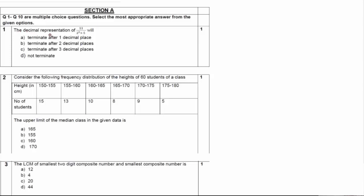Question number one: the decimal representation of 11 upon 2 raised to 3 into 5 — will it terminate after 1 decimal place, terminate after 2 decimal places, terminate after 3 decimal places, or not terminate? So here you can see 2 raised to 3 into 5.